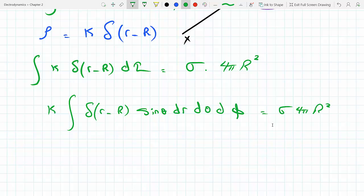And I know that this is a triple integral, so my r is going from 0 to R, my theta is going from 0 to π, and my φ is going from 0 to 2π.